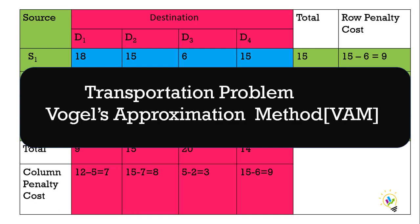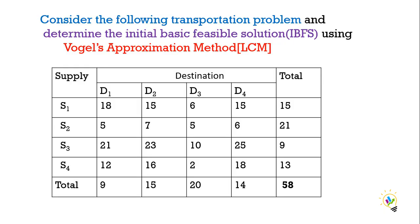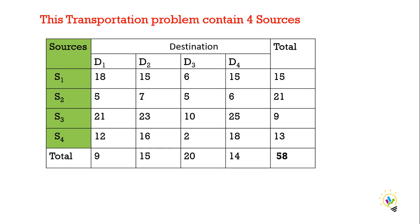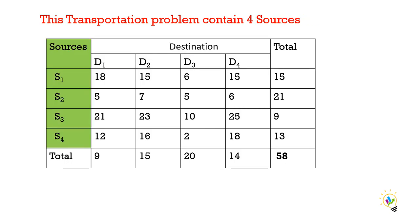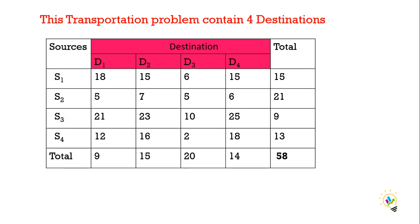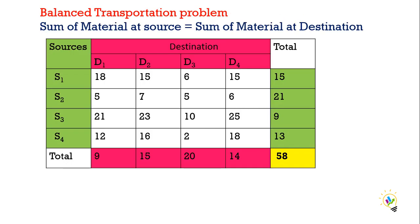In this video, I am going to discuss about the transportation problem using Vogel's Approximation Method. Consider the following transportation problem and determine the initial basic feasible solution using Vogel's Approximation Method. This problem has 4 sources and 4 destinations. The total material must be transported from these 4 sources to 4 destinations. This transportation problem is a balanced problem.